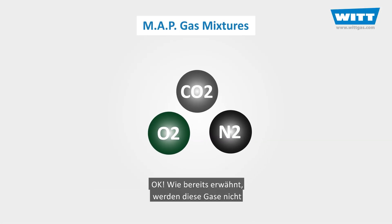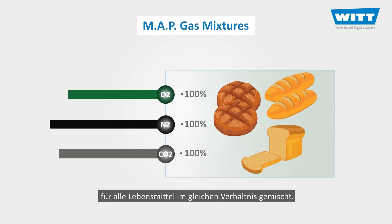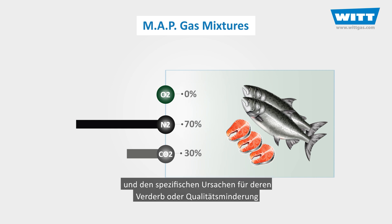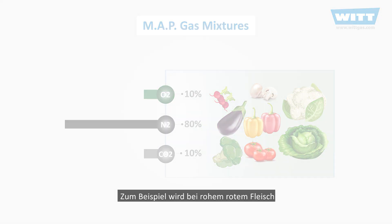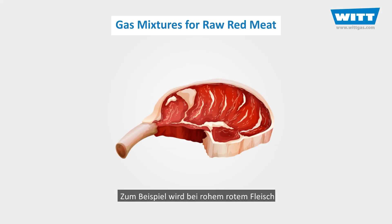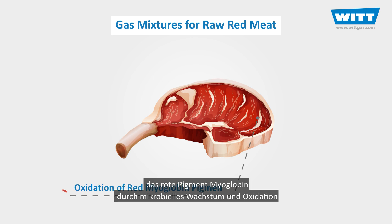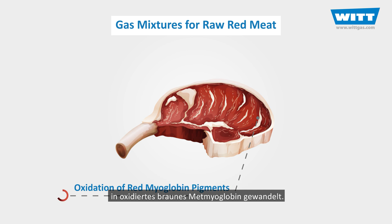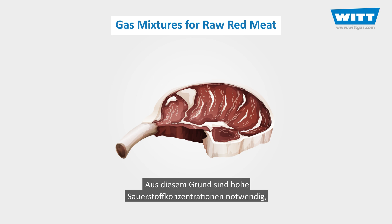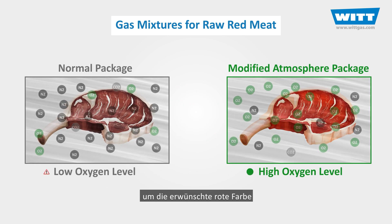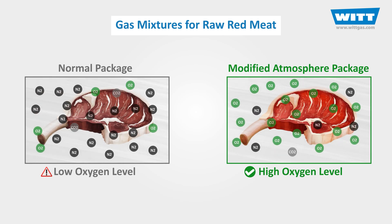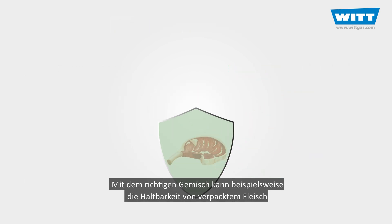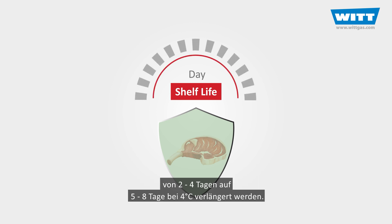As mentioned, we're not going to mix these gases in the same way for all kinds of foods. Depending on the type of food products and the specific causes of their spoilage or quality deterioration, the gas mixture would be different. For example, mechanisms that limit the shelf life of raw red meats are microbial growth and oxidation of the red myoglobin pigment, converting it to oxidized brown metmyoglobin. For this reason, high concentrations of oxygen are necessary to maintain the desirable red colour for a longer period of time. With the right mixtures, the practical shelf life of consumer-packed meat can be extended from 2–4 days to 5–8 days at 4°C.